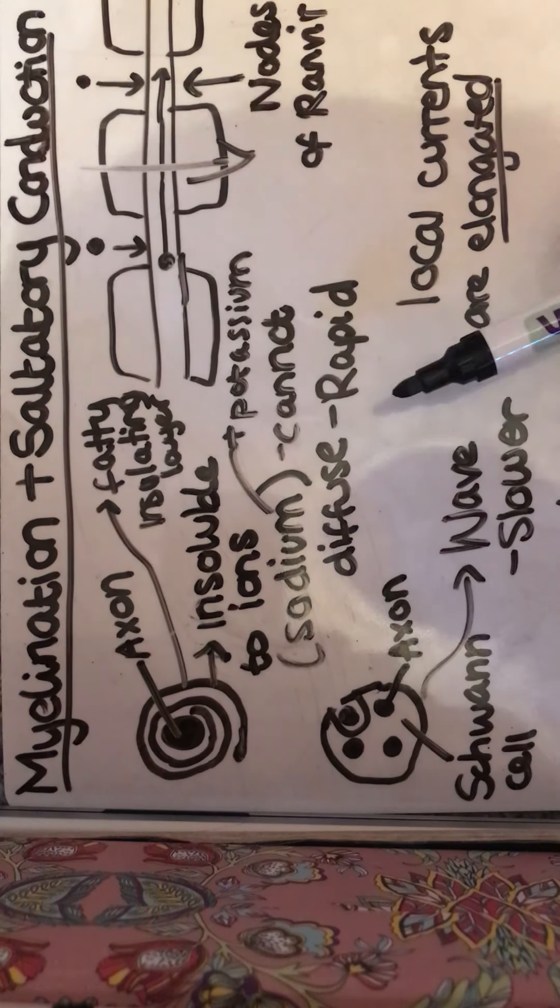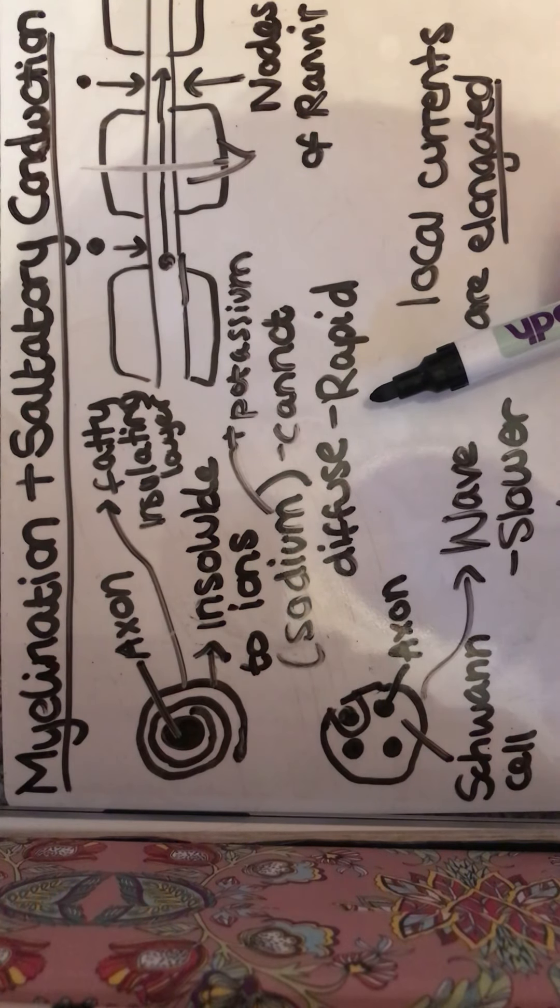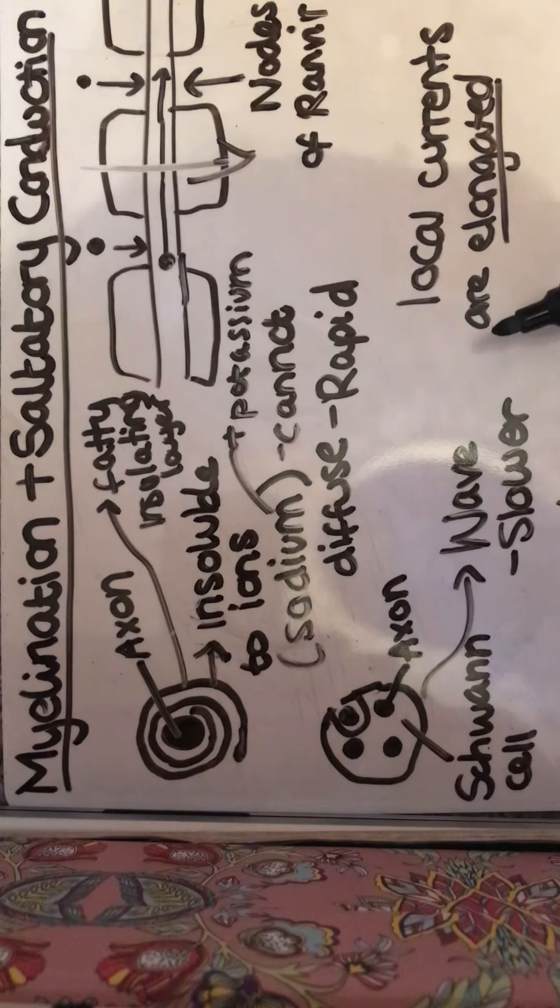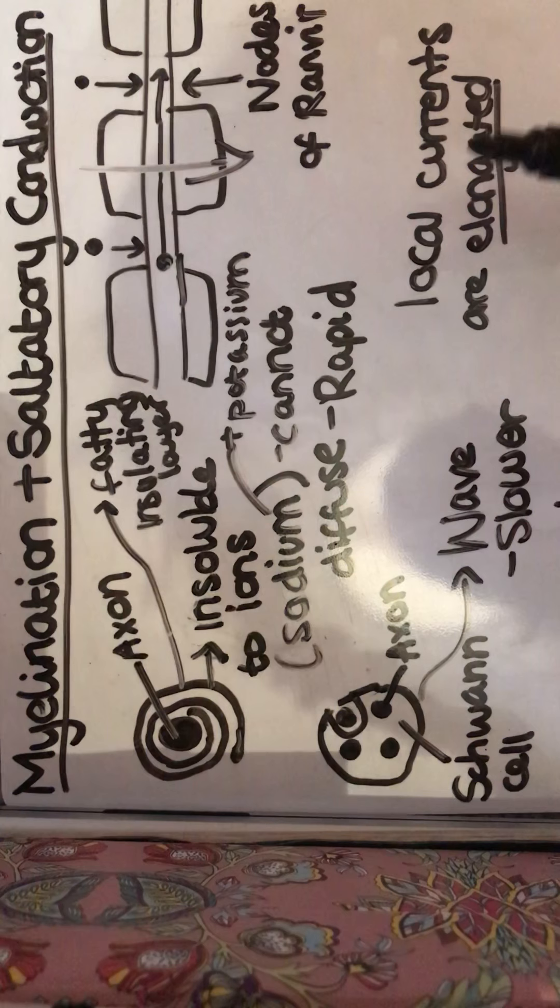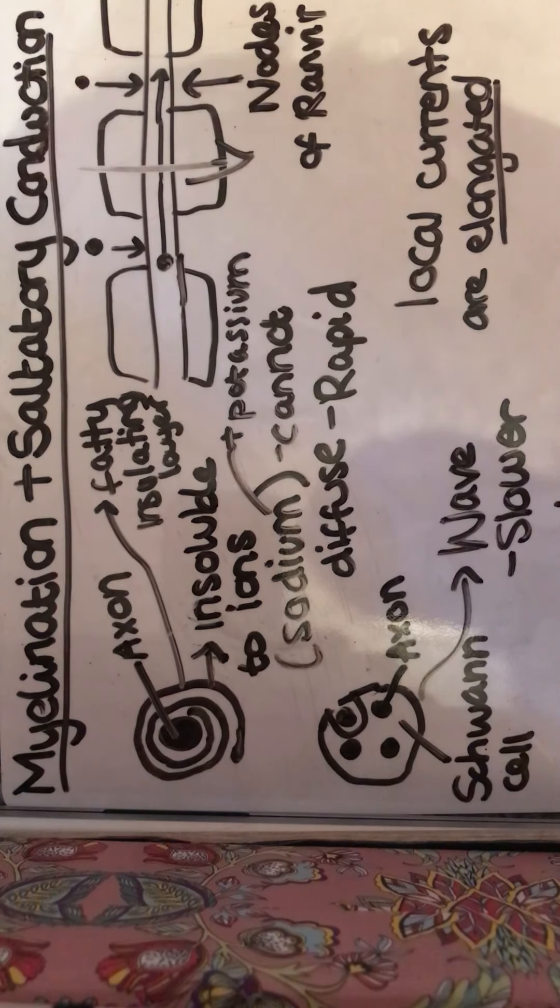So we're going to have a rapid conduction of our action potential through the saltatory conduction. If that's happening, then we're going to have local currents that are elongated, which they can produce quicker and longer distances of conducting the action potential.